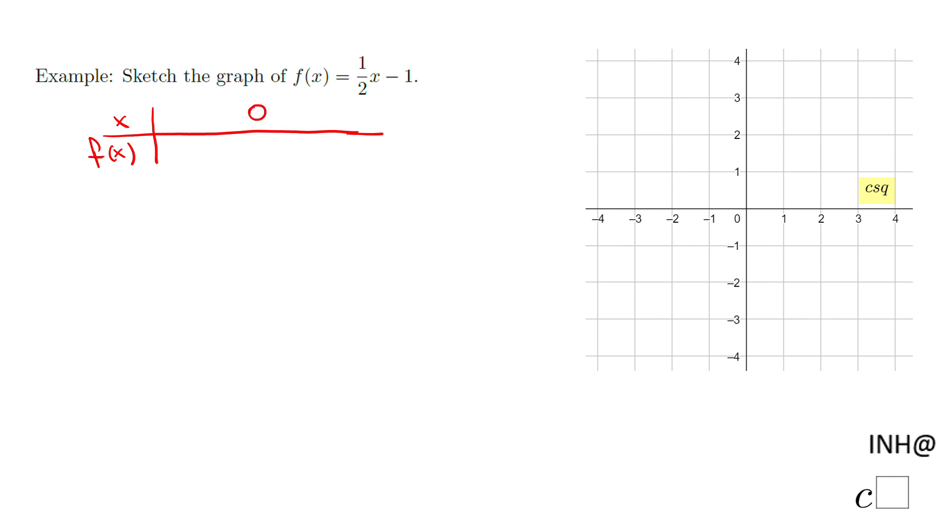good to use is zero. In this case, we have x = 0, that means f(0) will be 1/2 times 0 minus 1, and this is what? 0 minus 1, which is negative 1. This math can be done mentally, so basically I have a point (0, -1), which is